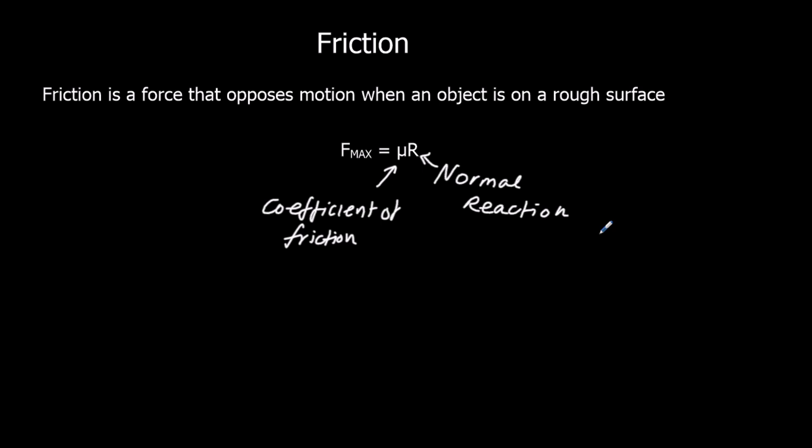Friction doesn't have to take its maximum value. It will only go up to the value it needs to stop the motion. But if it reaches its maximum value, that's called limiting friction, and the motion will continue. If the frictional force can't match the other force, then there will be an acceleration.